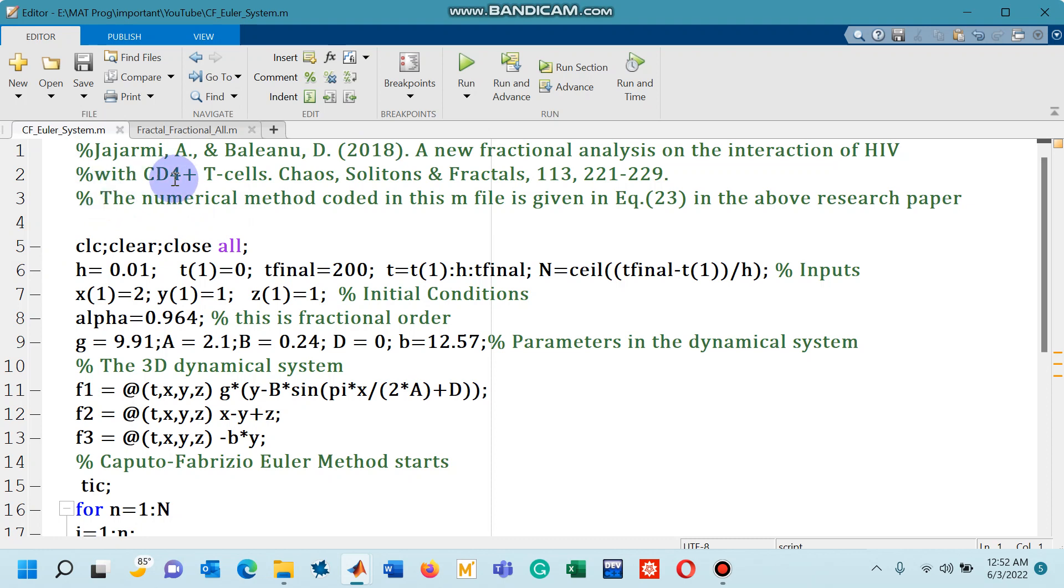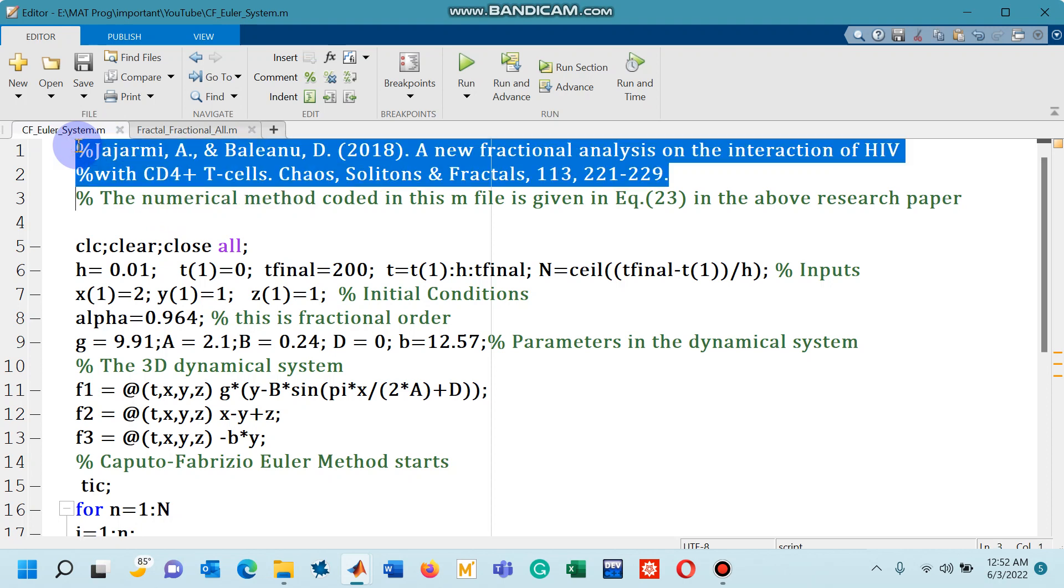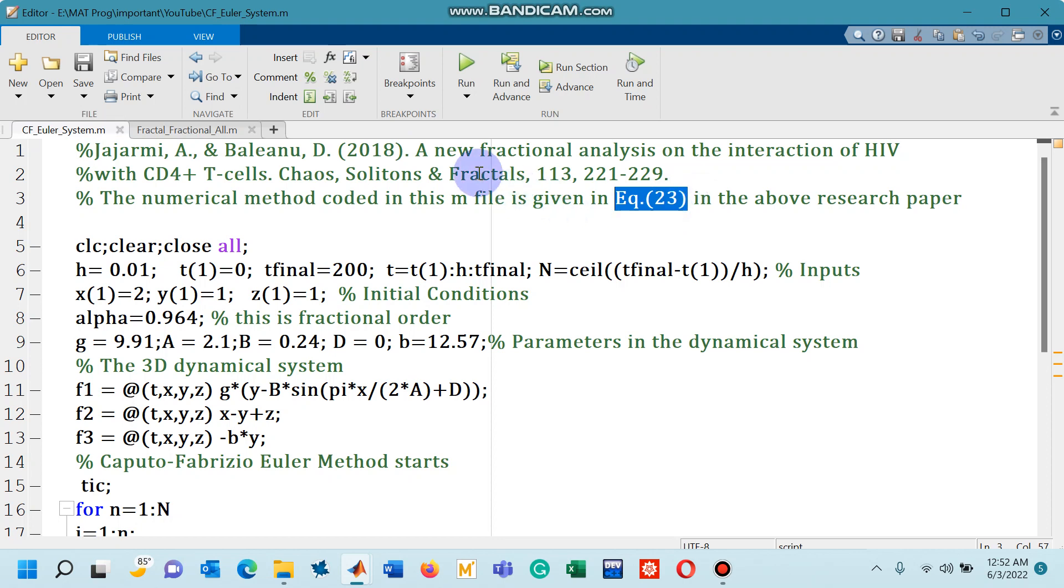So I have chosen a numerical method from a research paper which is now highlighted. The numerical method in this research paper is given by equation number 23. So you can easily download this research paper and you can see there is an equation 23 which is actually the numerical method called fractional Euler method with CF differential operator.